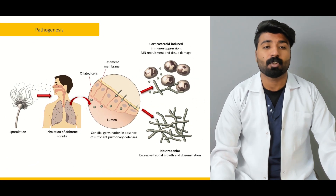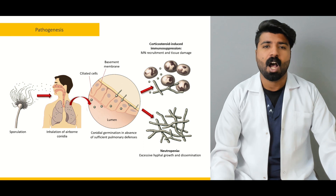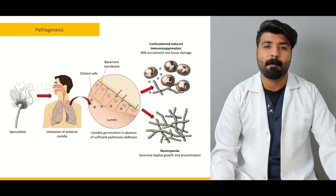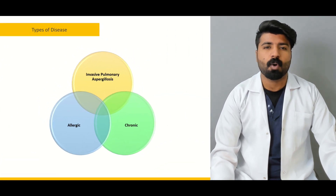Next, we're going to talk about the pathogenesis — how these spores and particles get inside our lungs, how they disseminate, and what kind of manifestations they produce when risk factors are present, whether due to glucocorticoid use or neutrophil dysfunction.